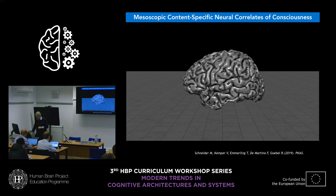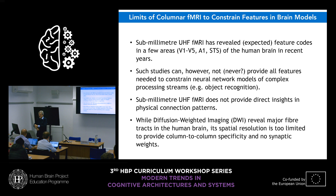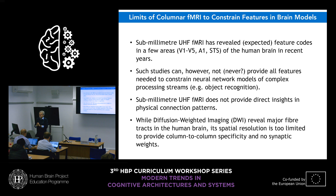I want to stress the limits of that, because to get such an experiment done is several years of work. It is basically impossible to predict that we will find even more fine-grained features for whole processing streams — like object recognition from oriented bars in V1 up to mid-level to higher-level features — in high-field fMRI in the near future. So we cannot hope that with this technique we will constrain the models in a very precise way in the short term. It is too slow, takes too much time, and we have resolution limits.